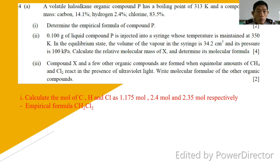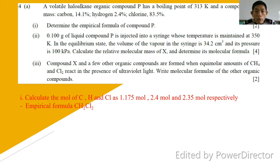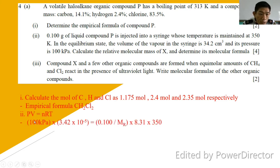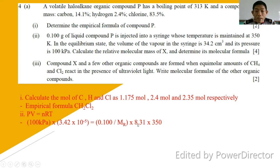Part two: 0.100 g of compound P is injected into a syringe whose temperature is maintained at 350 K. At equilibrium, the volume of vapor in the syringe is 34.2 cm³ and the pressure is 100 kPa. Calculate the relative molecular mass. Use PV = nRT. Note that 100 kPa = 100 × 10³ Pa, and volume must be in m³: 34.2 cm³ = 3.42 × 10⁻⁵ m³. Substituting 0.100/M × 8.31 × 350, the molecular mass is 85, giving n = 1. Therefore, the molecular formula is CH2Cl2.